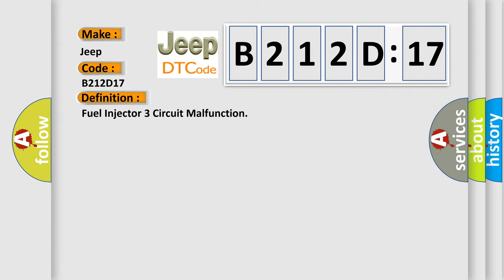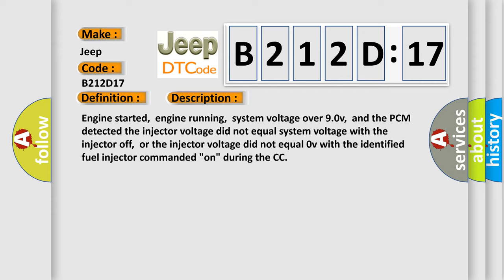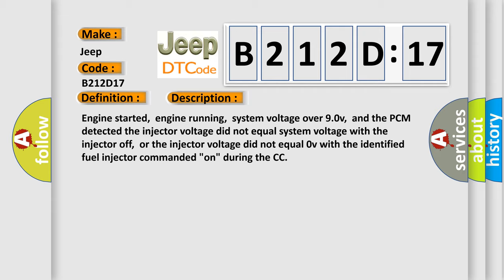Fuel injector three circuit malfunction. And now this is a short description of this DTC code: Engine started, engine running, system voltage over 9V, and the PCM detected the injector voltage did not equal system voltage with the injector off, or the injector voltage did not equal 0V with the identified fuel injector commanded ON during the CCM test.